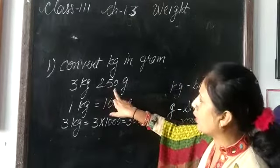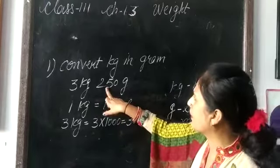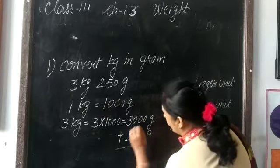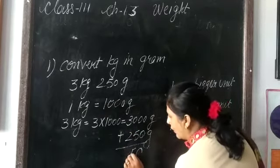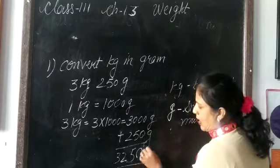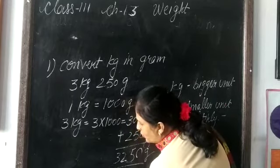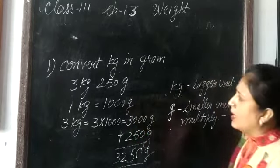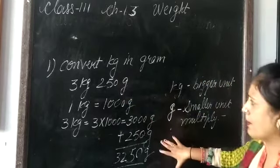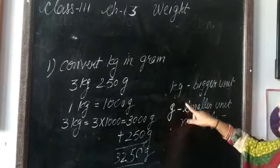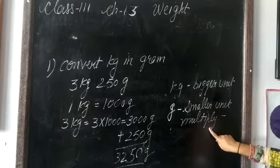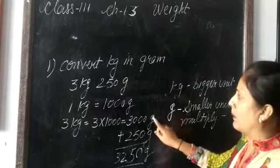250 grams more are given, so we will add: 3000 grams plus 250 grams. Adding digit by digit: 0 plus 0 is 0, 0 plus 5 is 5, 0 plus 2 is 2, and 3 as it is. Total: 3250 grams. I hope it is clear to everyone. When we convert kilogram into gram — bigger unit into smaller unit — we multiply.